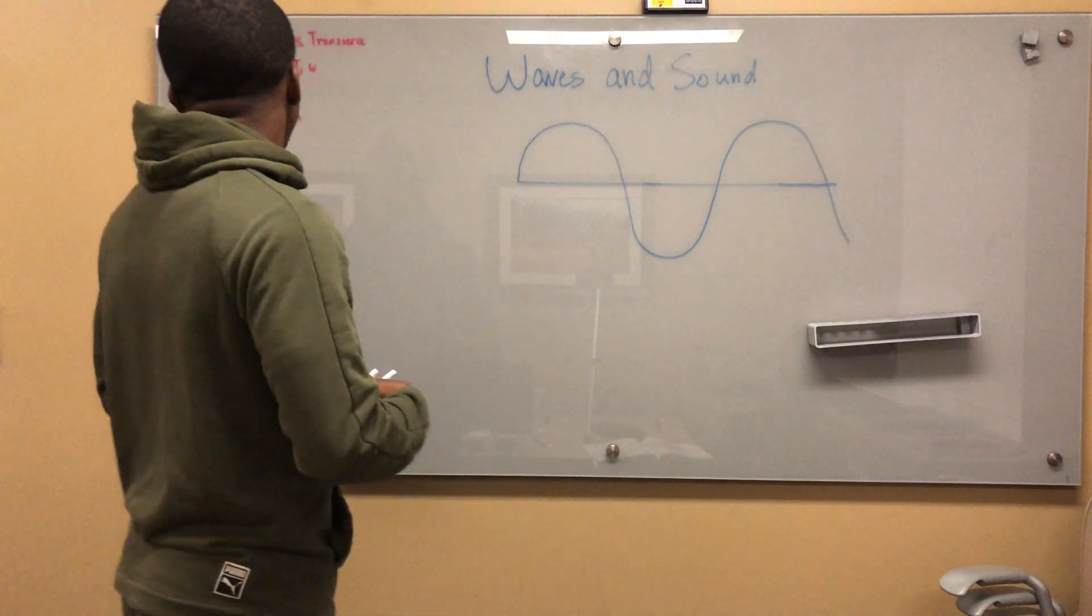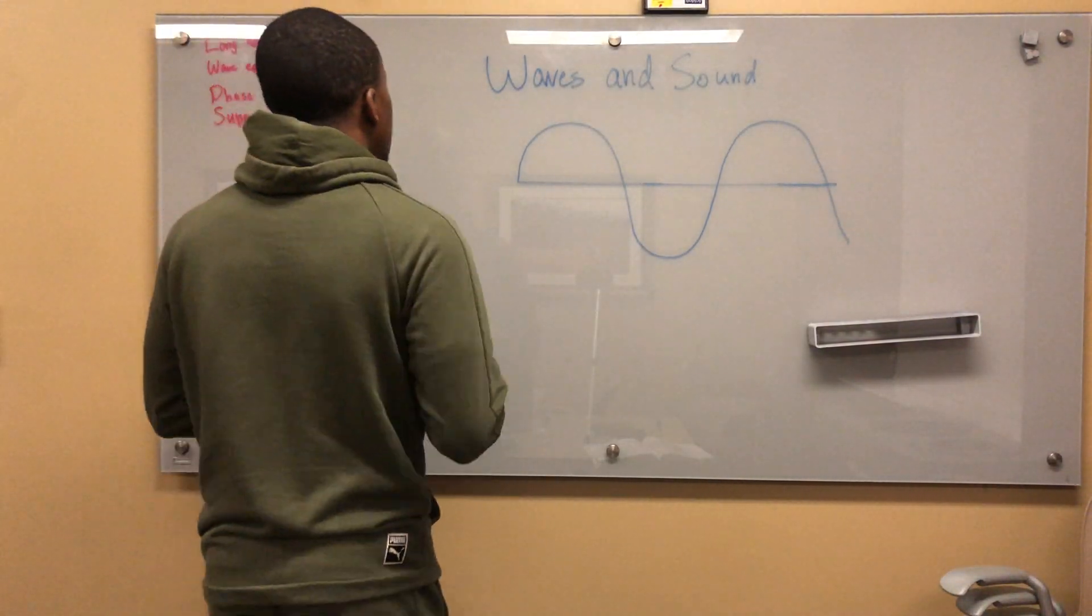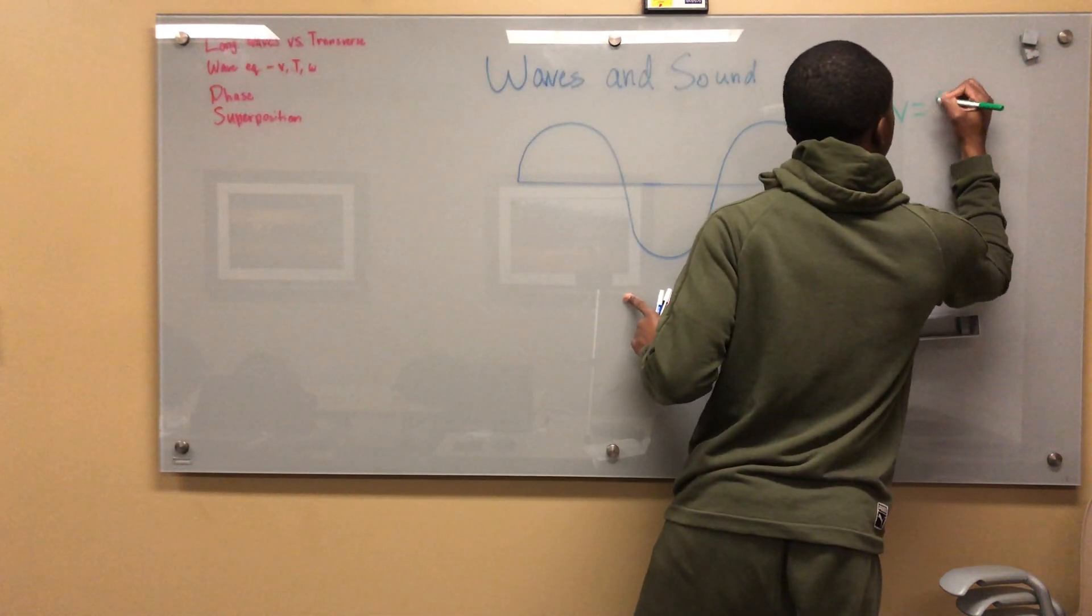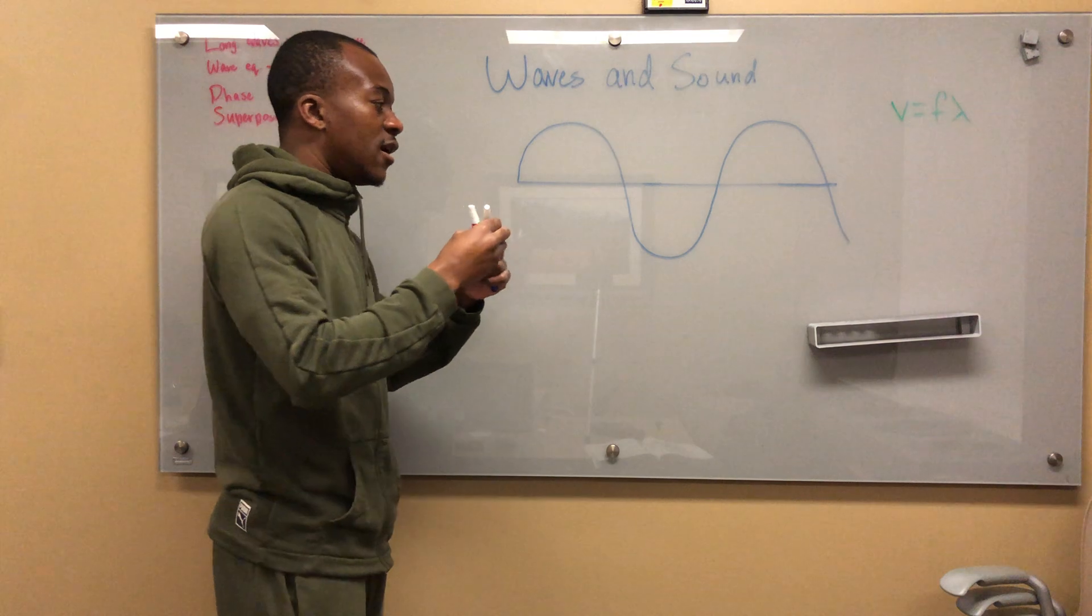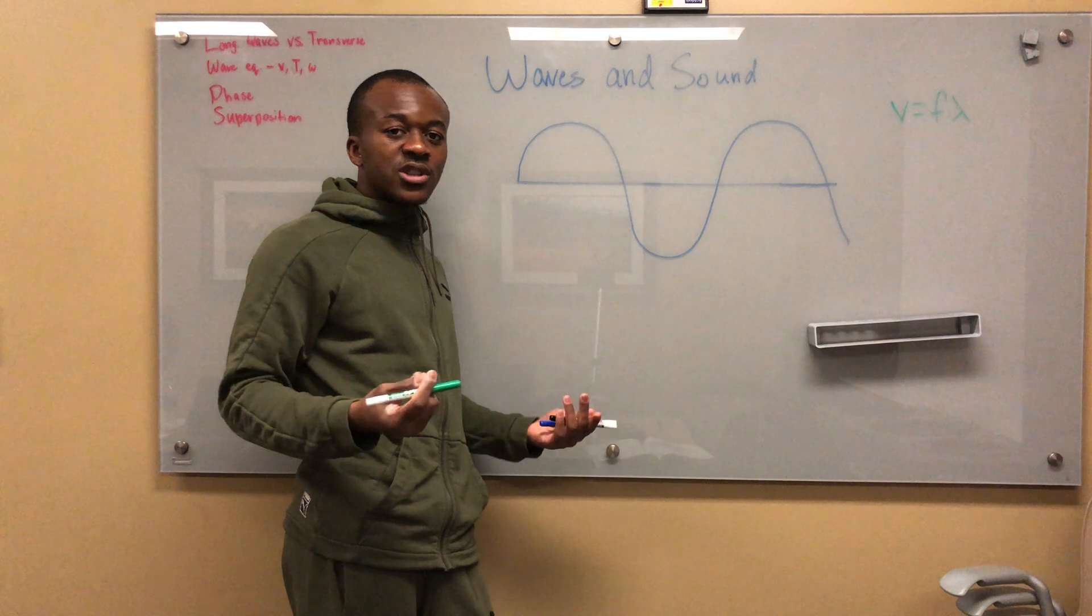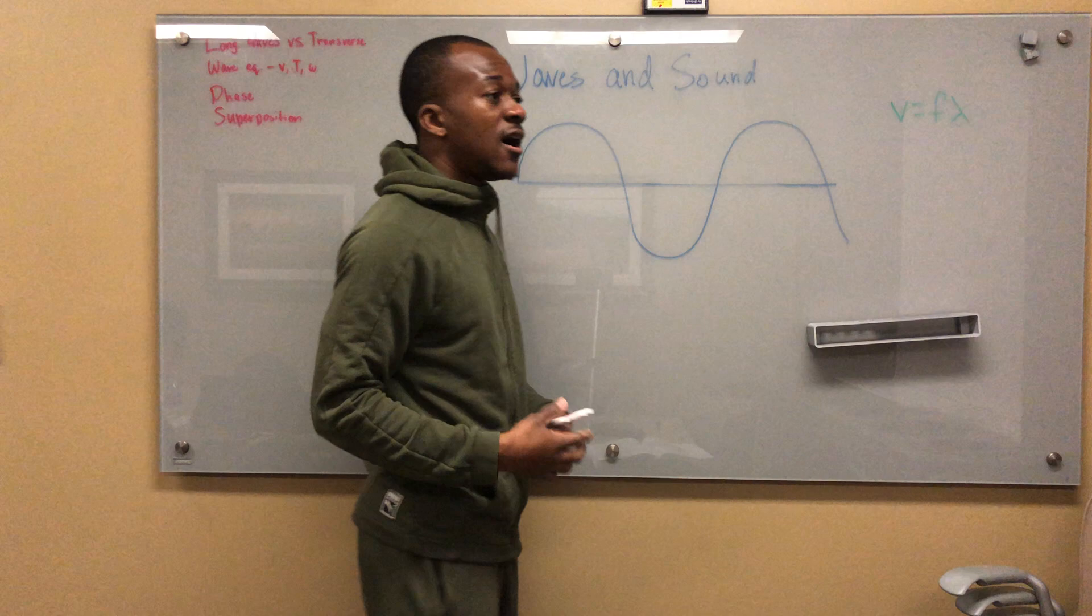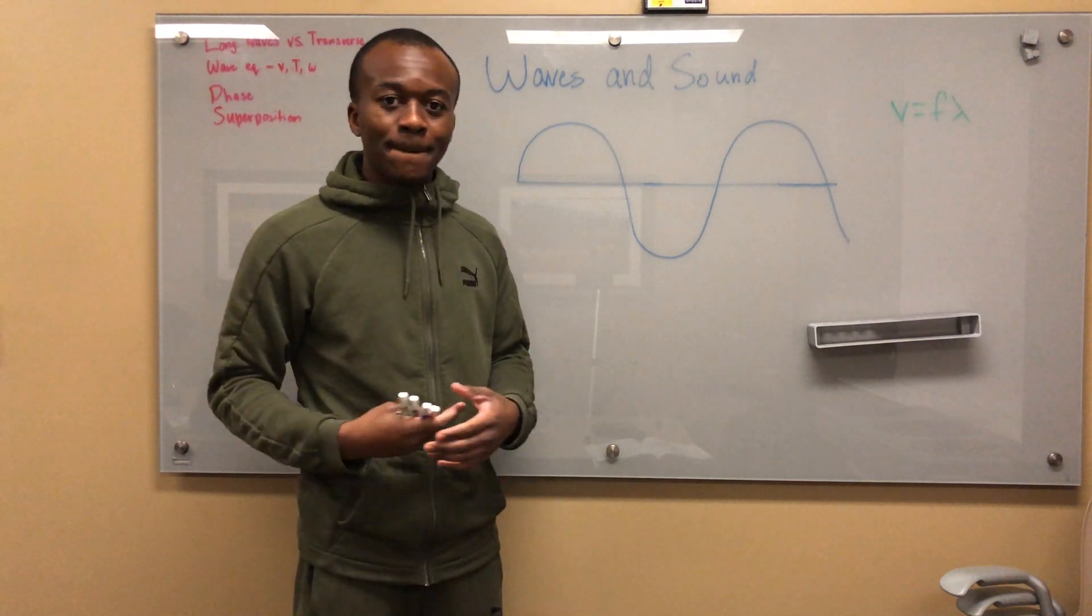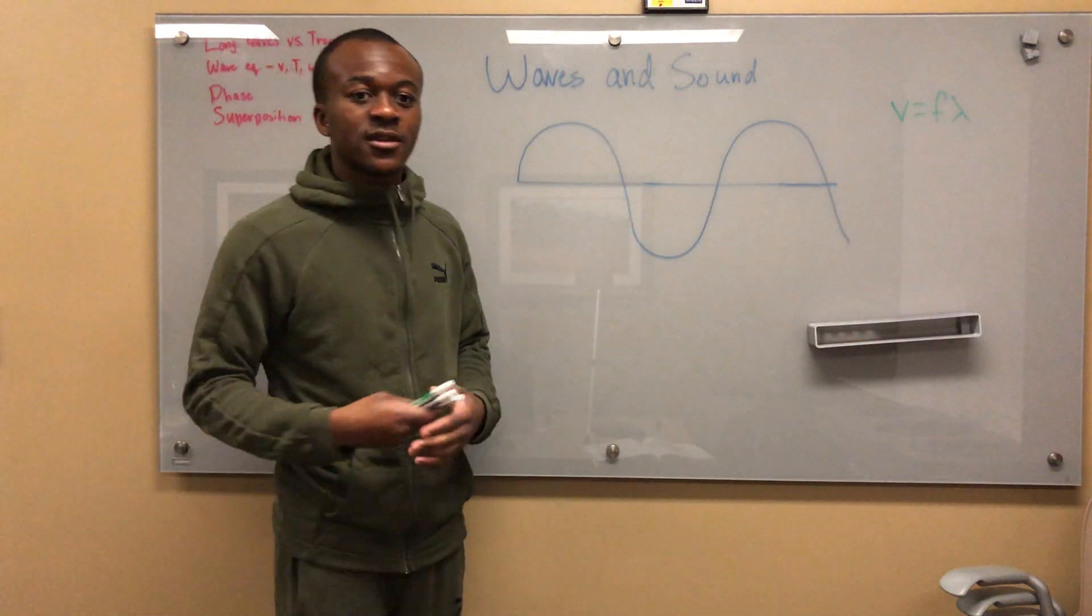I want to talk about the wave equation. This is the most basic one: v equals f lambda. This v stands for velocity - you can measure that in meters per second. Sound travels at roughly 330 meters per second if I remember correctly. This f stands for frequency.